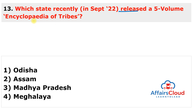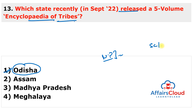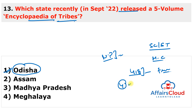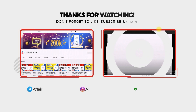The next question: Which state recently released a five-volume Encyclopedia of Tribes? The answer is Odisha. Chief Minister Naveen Patnaik released this five-volume encyclopedia, published by the Scheduled Caste and Scheduled Tribe Research and Training Institute and the Odisha State Tribal Museum. The encyclopedia contains 418 research articles on tribals and took more than four years to compile. Odisha is the third-largest tribally populated state in India, with 62 tribal communities including 13 particularly vulnerable tribal groups.